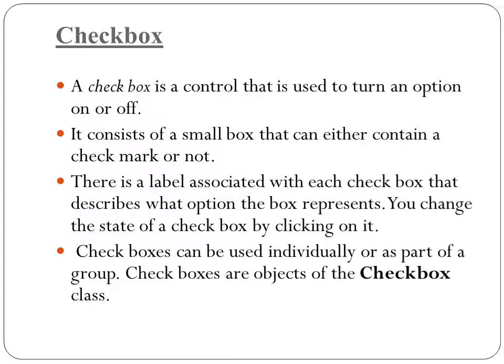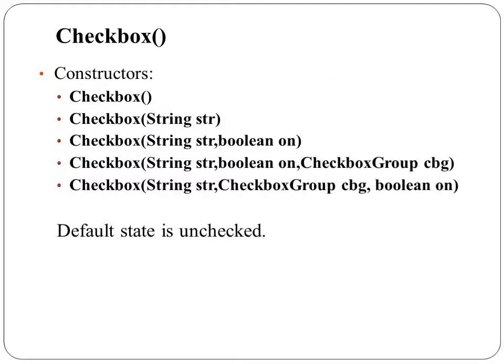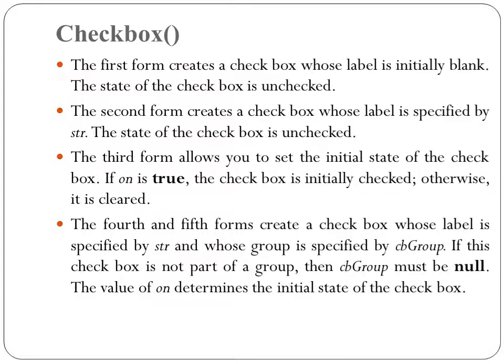The next control is Checkbox. A checkbox is a control used to turn an option on or off. It is a small box that contains a checkmark, and every checkbox has a label associated with it. You can change the state of a checkbox by clicking on it. There are five constructors: the first takes no arguments, the second takes a string argument, the third takes a boolean to set initial state, and the fourth and fifth include a CheckboxGroup parameter.